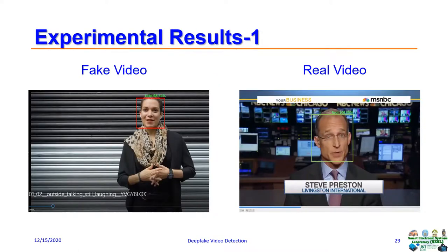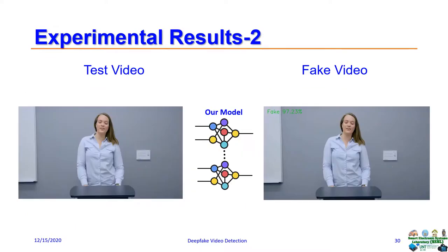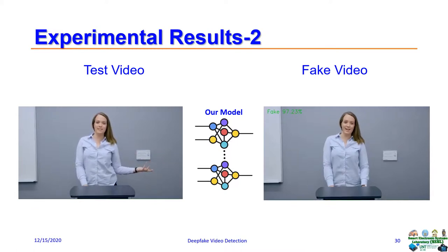This slide shows the result from a fake video and a real video. Our model detects both videos correctly with high probability. The left-hand side video is the video we started with. This video was fed into our model, and our model detected it as a fake video with 97.23% probability. So our model worked pretty well.